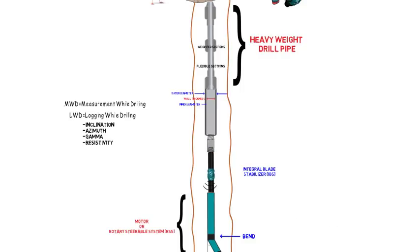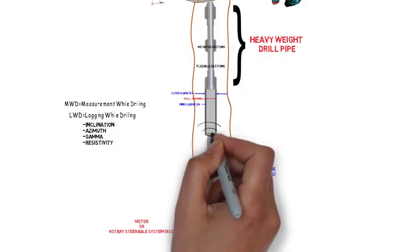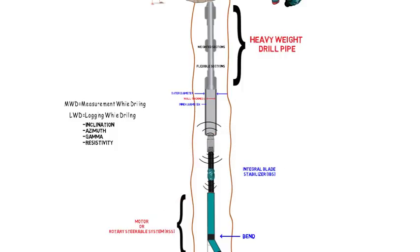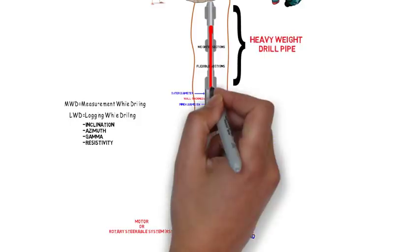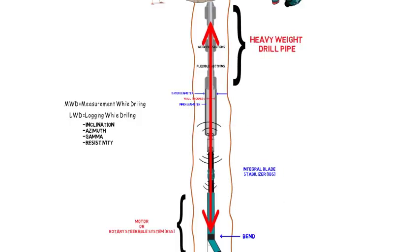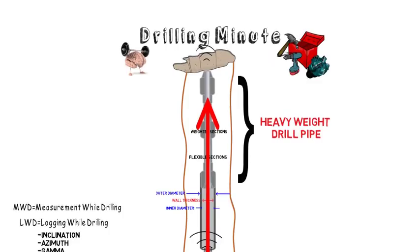Crossover adapters are used to link together tool joints that don't have matching connections. Another class of tools exists to aid in axial movement of the drill string, such as jars, shock tools, and drag tools, which either attenuate or amplify the push or pull on the drill string.